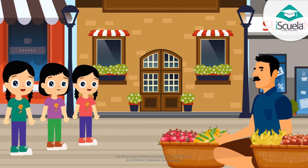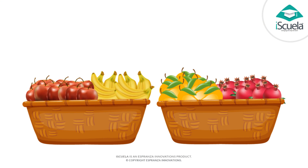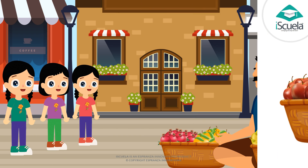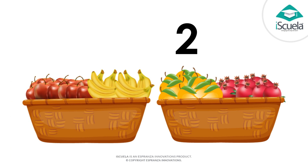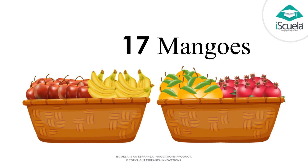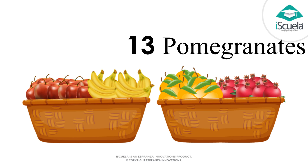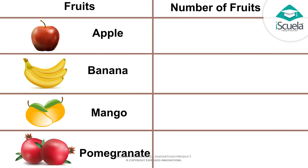Unmoor, I will count the fruits and you write the number in the table. There are 10 apples. There are 20 bananas. Mangoes are 10. Now let's write these numbers in the table: Apples 15, Bananas 20, Mangoes 17, Pomegranate 13.